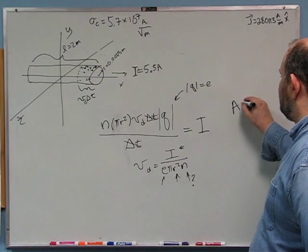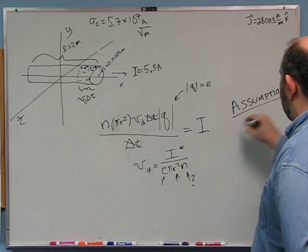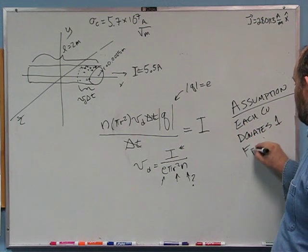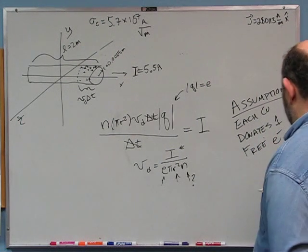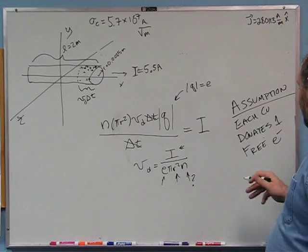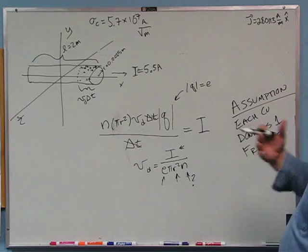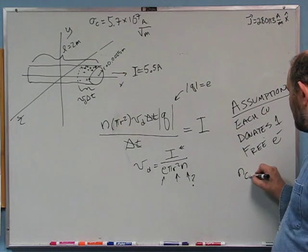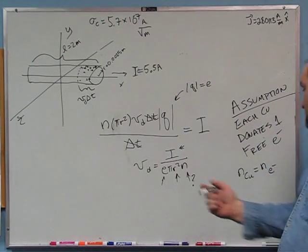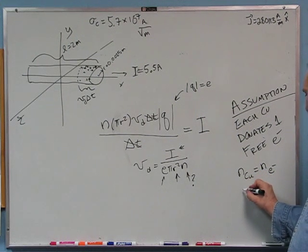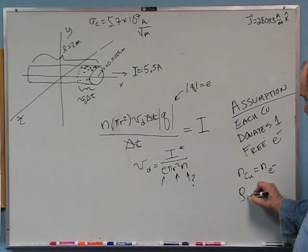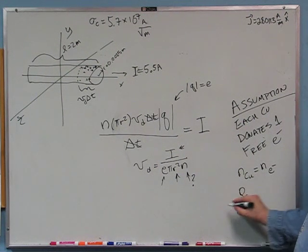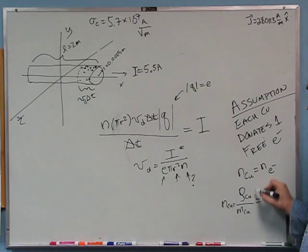I'm going to assume that each copper atom donates one free electron. That may not be exactly right — it may be that each copper donates two free electrons or on average one and a half. I'm going to make this assumption. So the number density of copper equals the number density of free electrons. And we know the number density of copper equals the mass density divided by the mass of one copper atom — things we can look up.